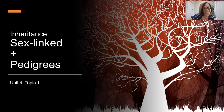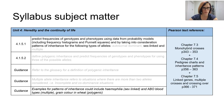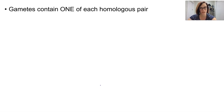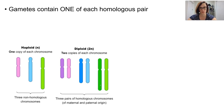In this lesson we are looking at sex-linked inheritance and pedigrees. Let's travel back in time to where we learned about meiosis and the formation of gametes. We know that each gamete will contain one of each of the homologous pairs of chromosomes, including one sex chromosome. In humans, we're talking X and Y.